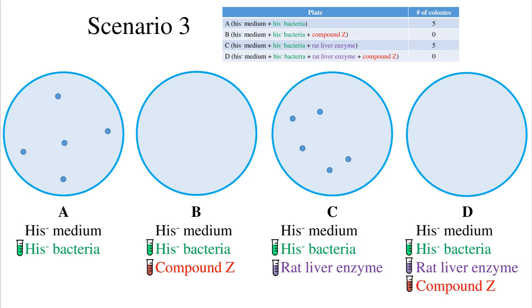In the final scenario: plate A has 5 colonies, plate B has 0 colonies, plate C has 5 colonies, and plate D has 0 colonies. These results indicate that the compound decreases the rate of spontaneous reverse mutation, both in its parent and metabolite form. Perhaps it helps with DNA repair mechanisms. This compound may exist, or it may be hypothetical.